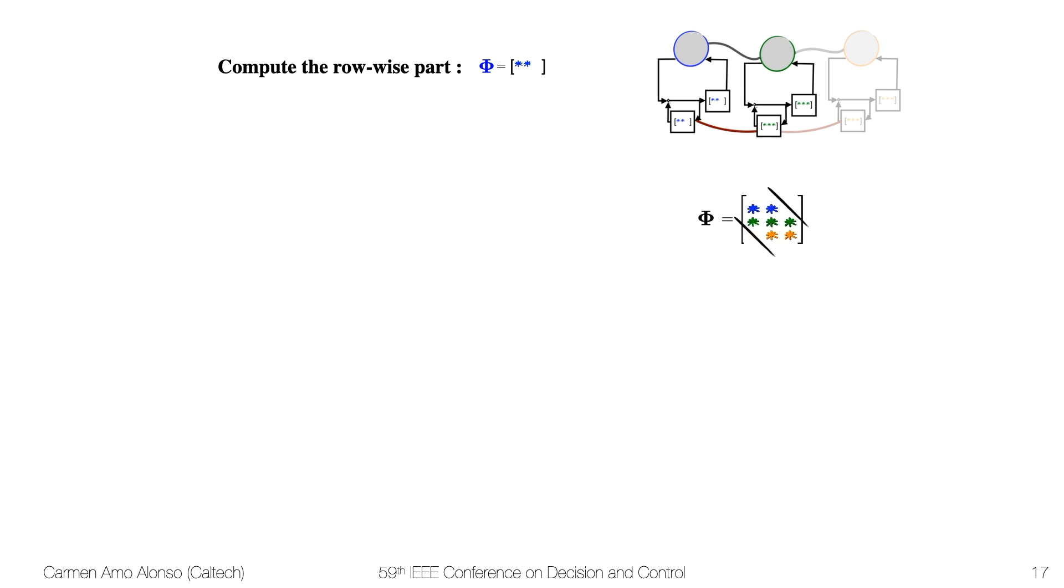The first thing we're going to do is solve the row-wise separable part. As the blue subsystem, we're only going to solve for the first row of phi. This is the problem that we're going to solve for. Notice that we require an information collection step at the beginning of the algorithm to know what the initial condition was for our neighbors.